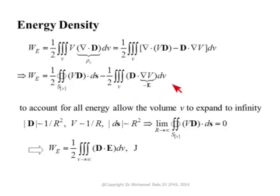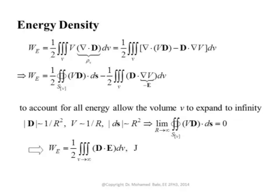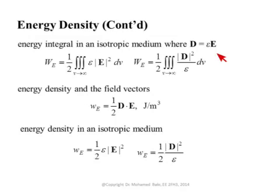We are left with the volume integral over all space where there is electric field. With D dot (minus E) and putting the minus sign out, this gives the electric energy stored in the electric field: W = ½ ∫ D·E dv. So to calculate the electric energy stored over a volume, you find E and D at every point, take their dot product, integrate over the complete volume, and multiply by one half. If the field extends to infinity, you must integrate to infinity. We can also write this using D = εE, giving W = ½ ∫ ε|E|² dv.